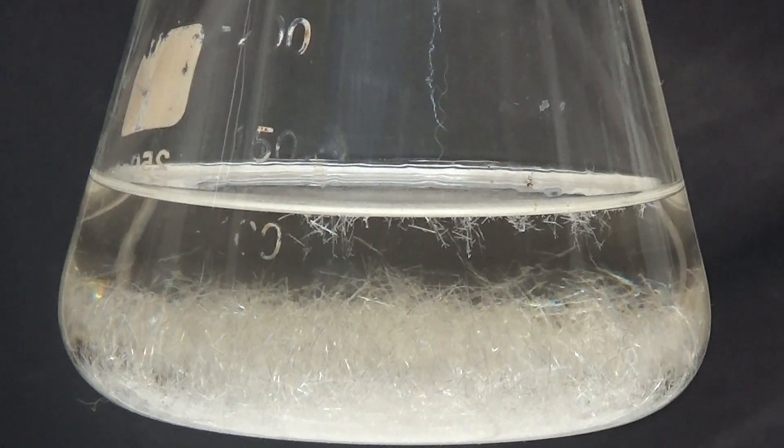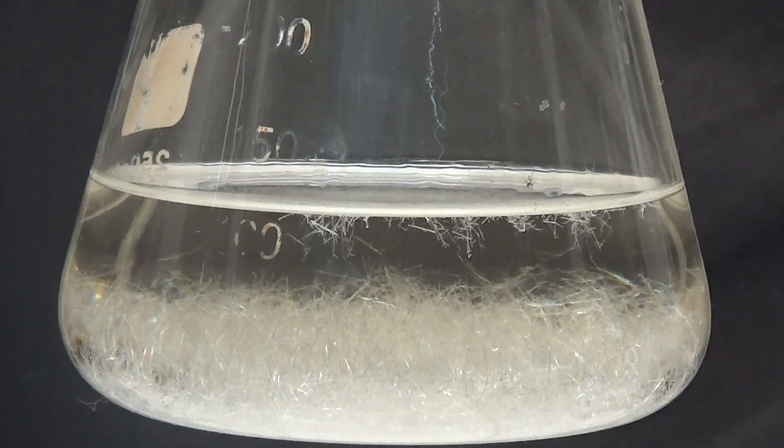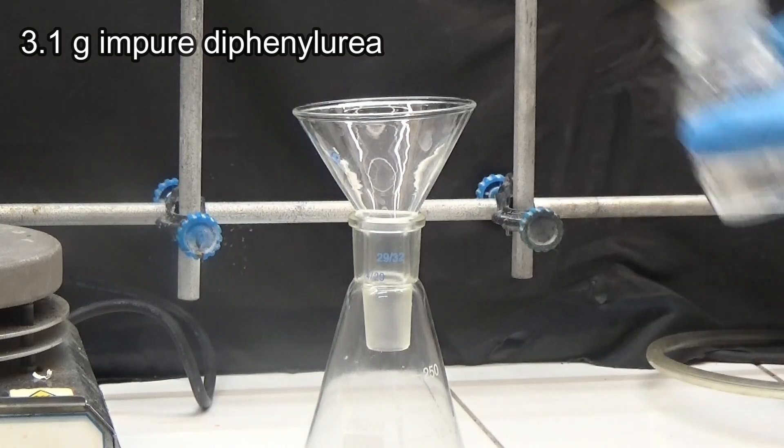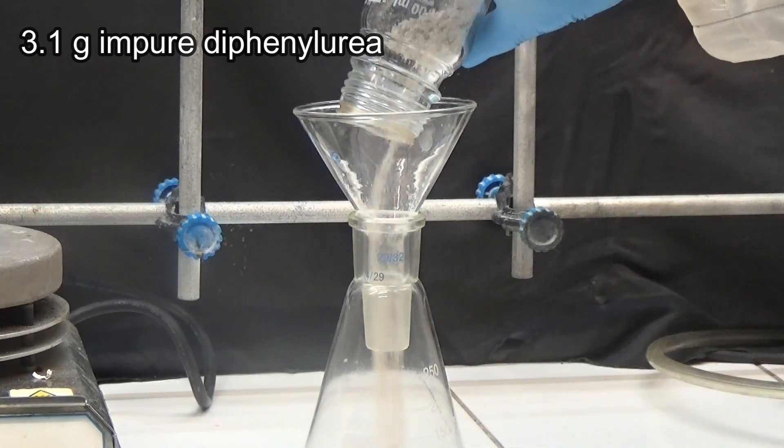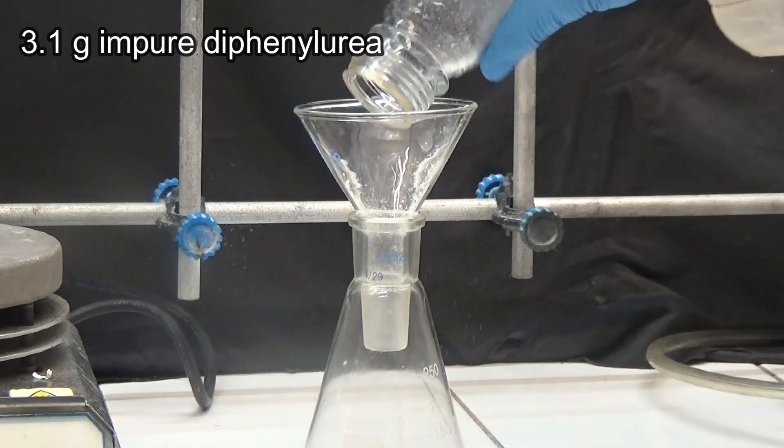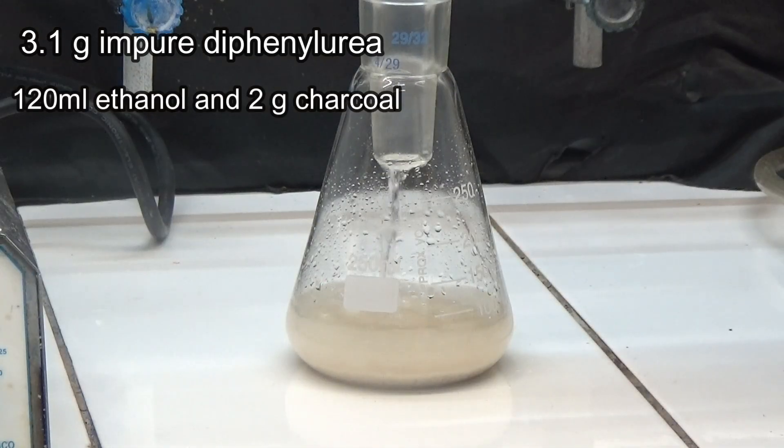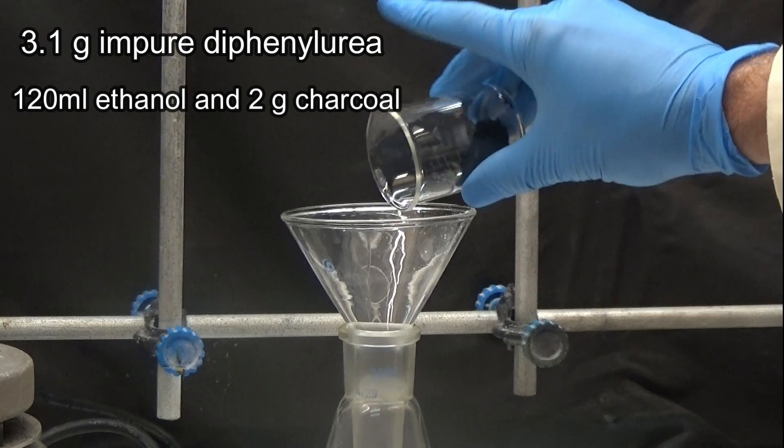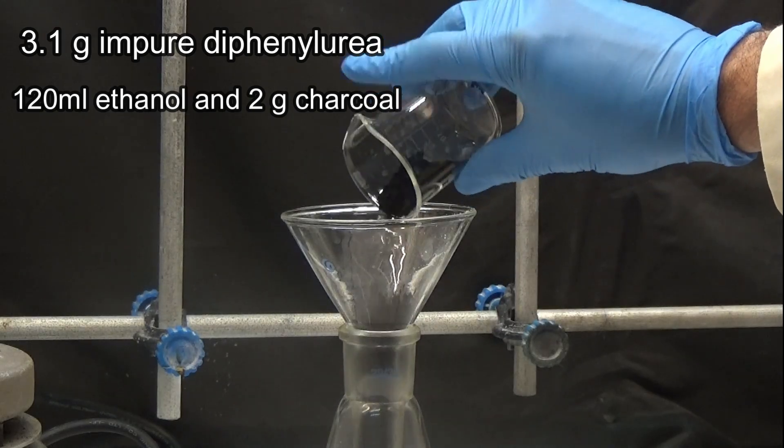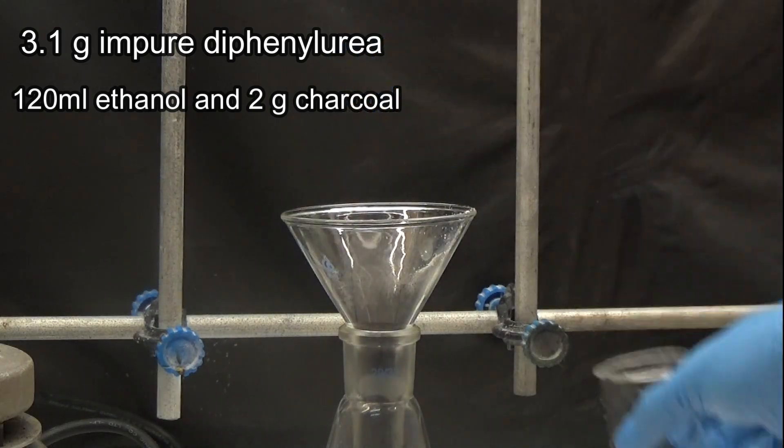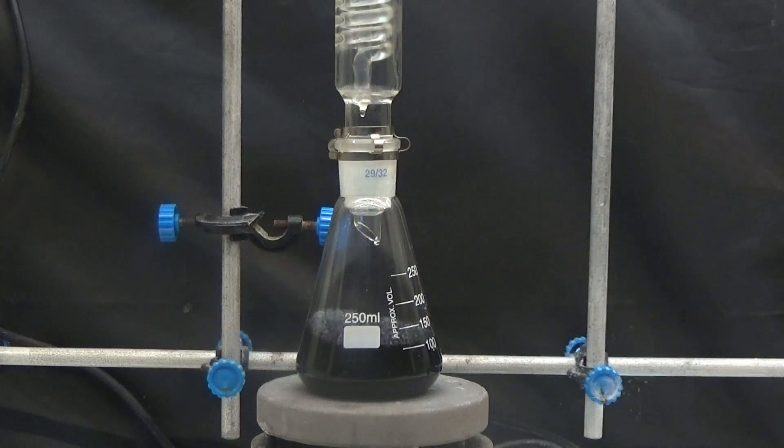Our next task is to purify the phenylureas that were obtained by crystallization. To purify diphenylurea, it is crystallized from ethanol and decolorized with activated charcoal. The impure diphenylurea yielded 3.1 grams. We dilute it with 120 mL of ethanol and add 2 grams of activated charcoal. Boil at reflux for an hour.